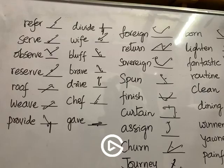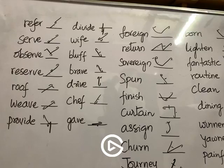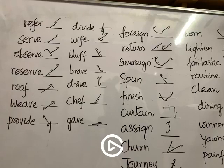The West Bengal Restoration of Alienated Land Act 1973 contemplates, in substance, the return of land to a small landholder in a situation where a landholder conveys the same to raise funds to tide over a financially distressed condition. For restoration of the conveyed land, the concerned landholder is required to make an application to the authority prescribed under the said statute, referred to henceforth as the 1973 Act.